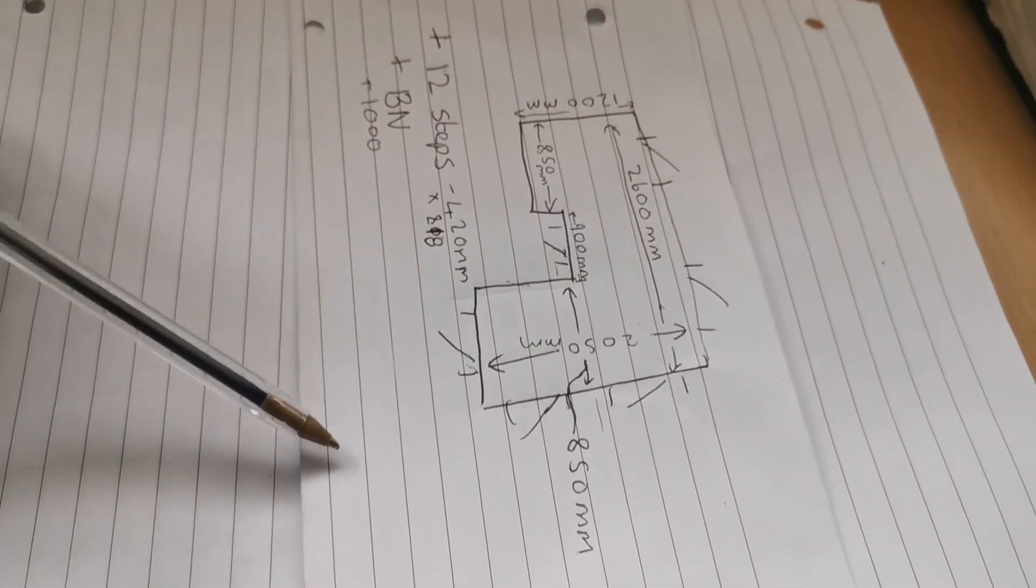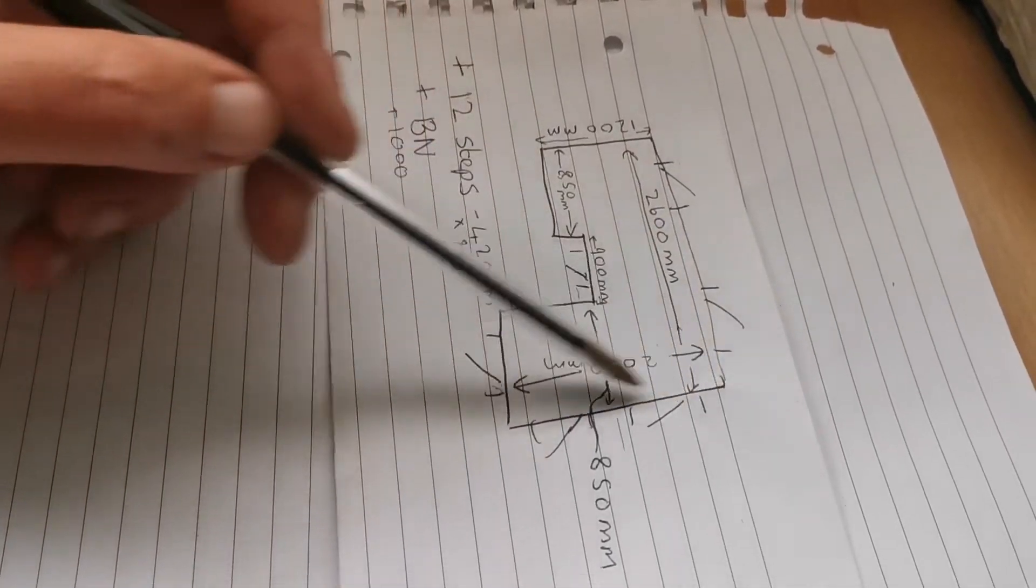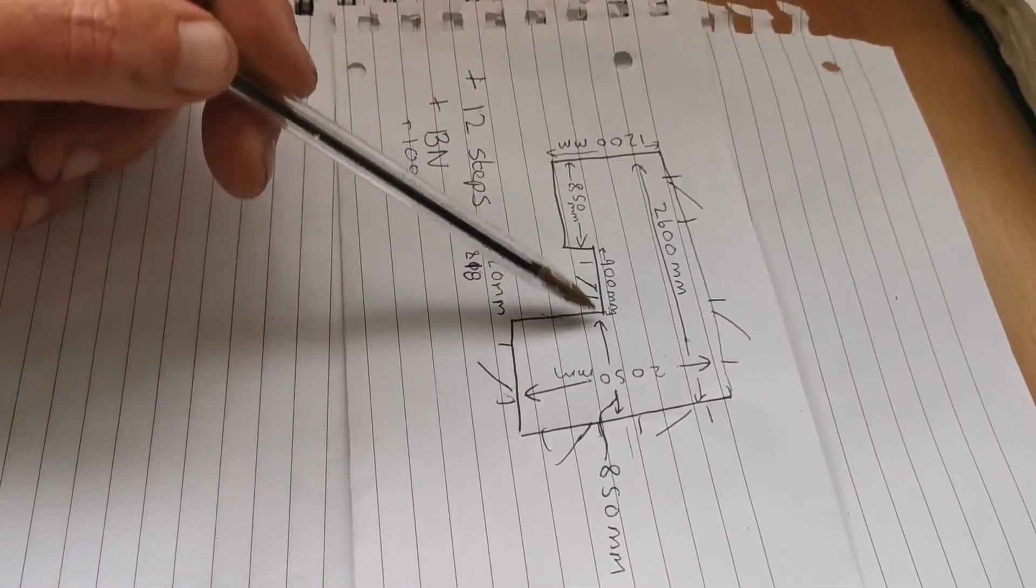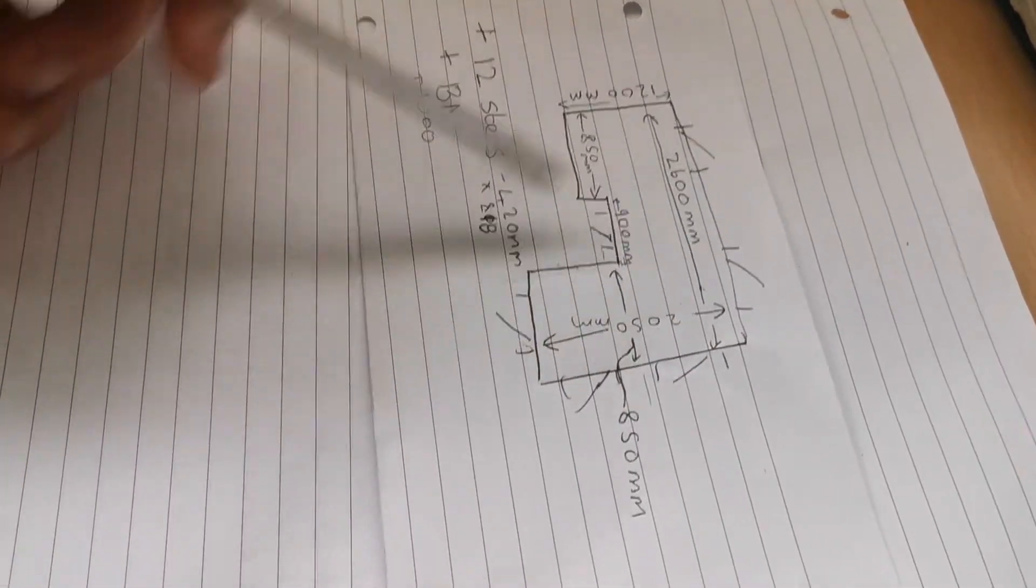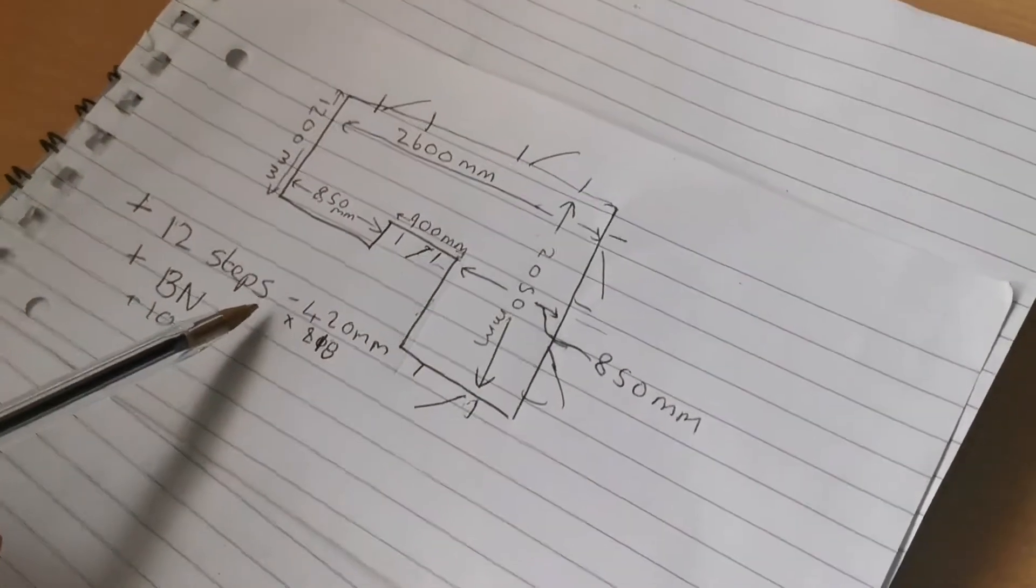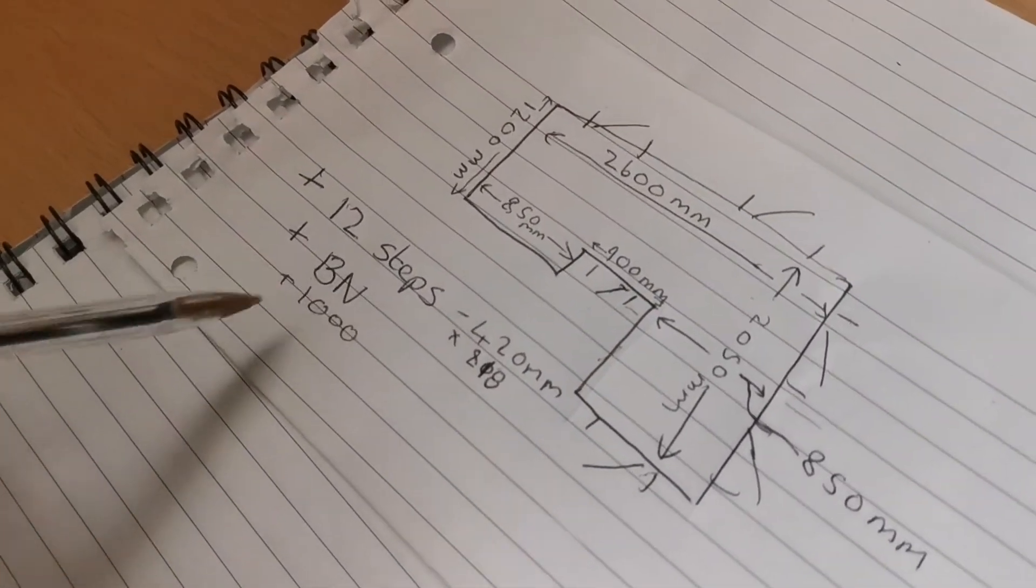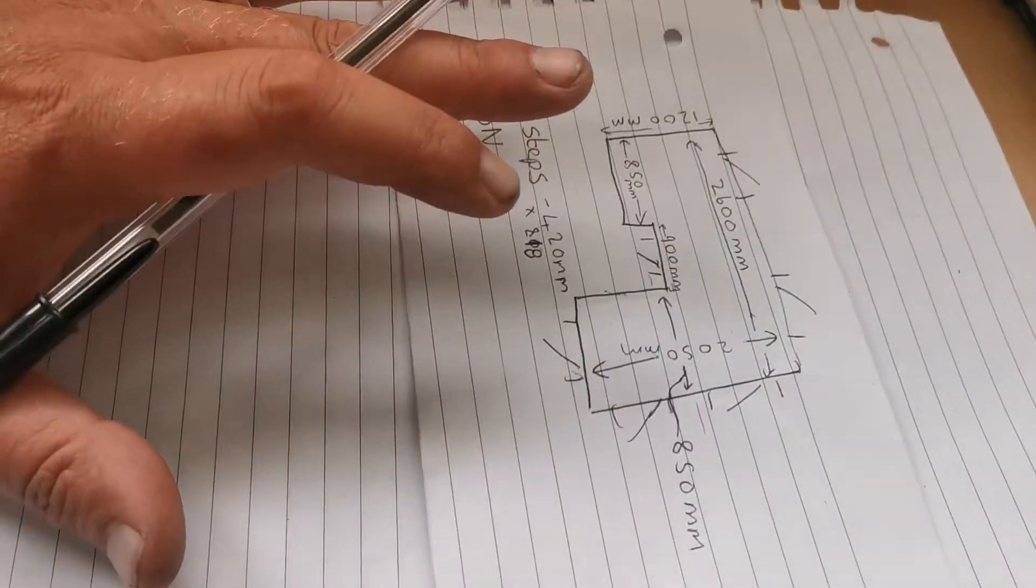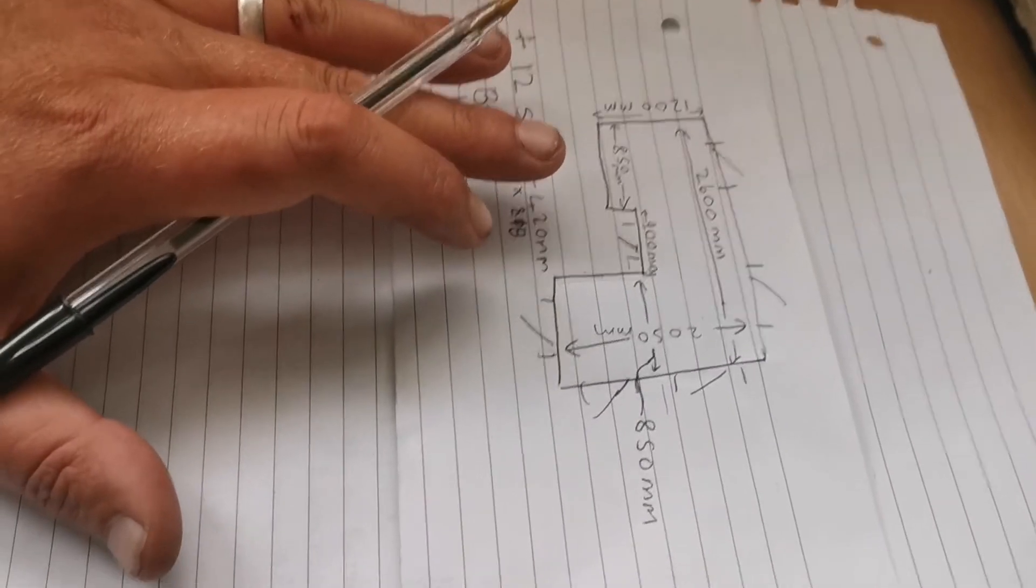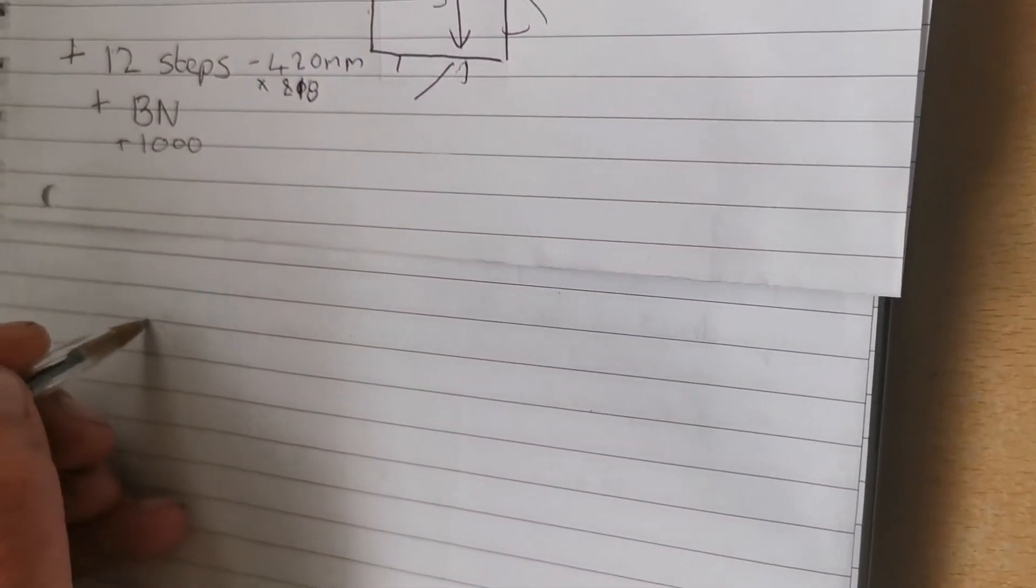Now you've seen how to measure the stairs. These are the measurements I've had and this is a rough outline of the landing. I was doing this as I went along measuring. You'll see the layout. Do a rough little diagram of the areas - this is a landing, then 12 steps plus the bullnose. The next part is to translate this into a carpet plan format.